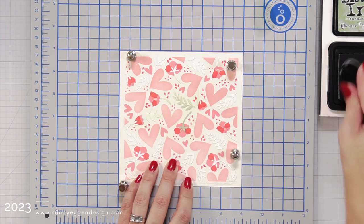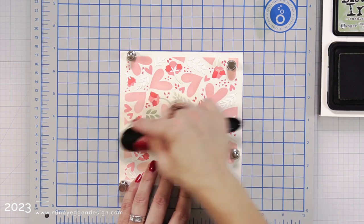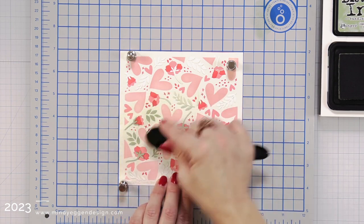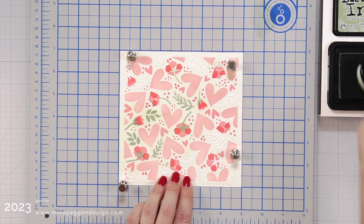So after I cleaned up my work surface, I have my cardstock back down and this last layer lined up and I'm going to add that green color to the open areas of the stencil.